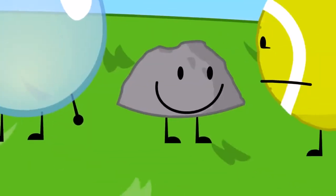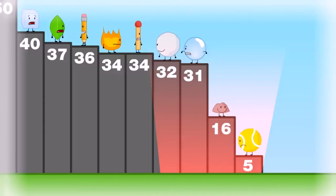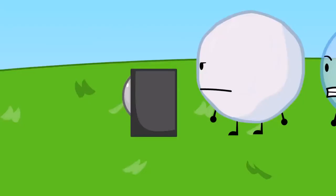Snowball, Bubble, Rocky, and Tennis Ball. Last episode, you four had the lowest scores. Go to the cake-at-stake place to see who will be eliminated.